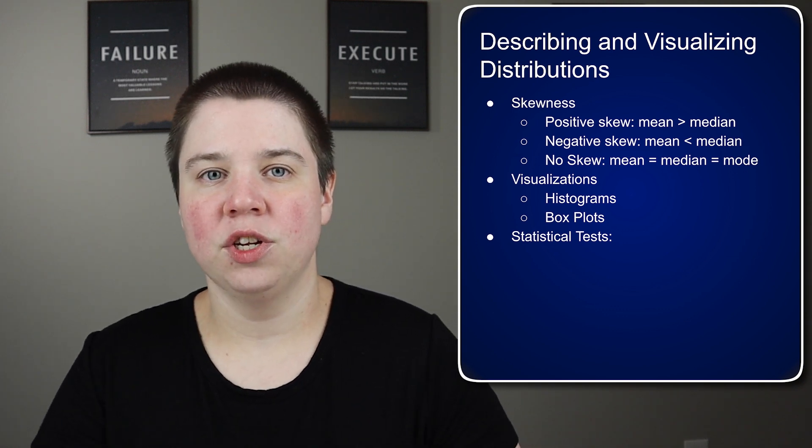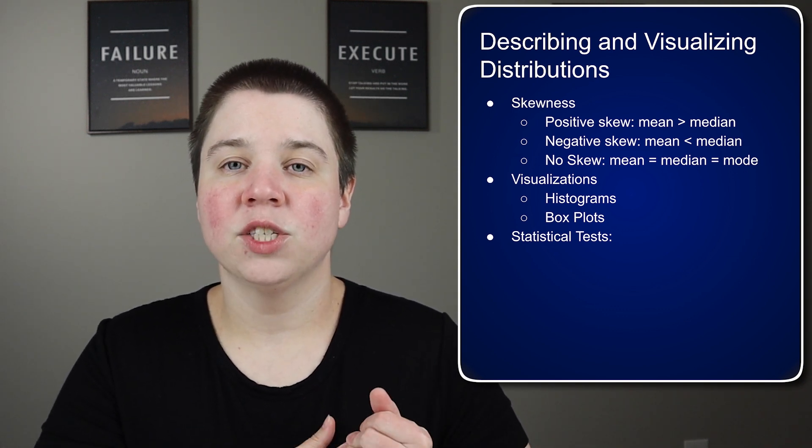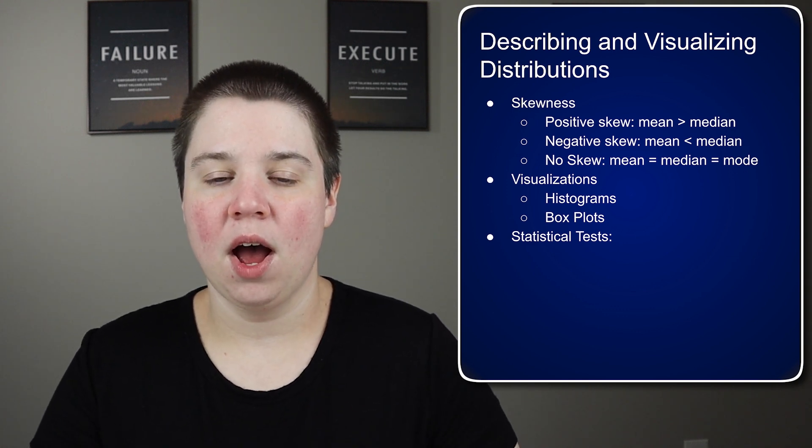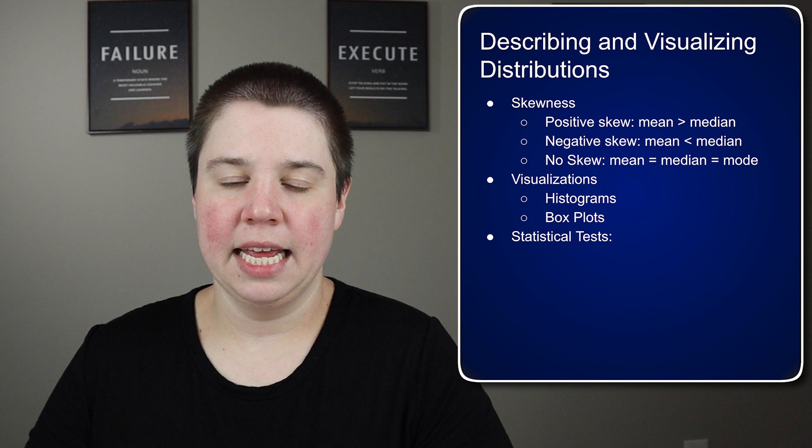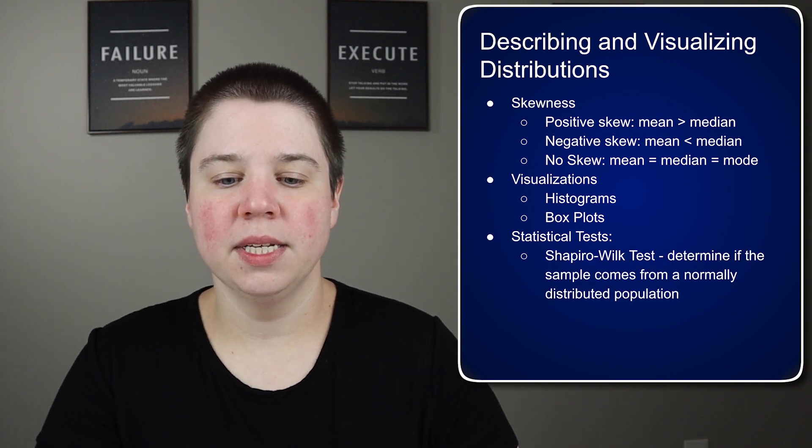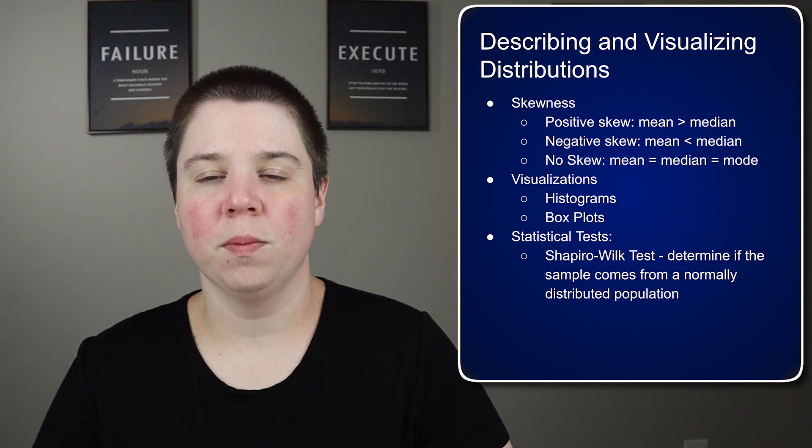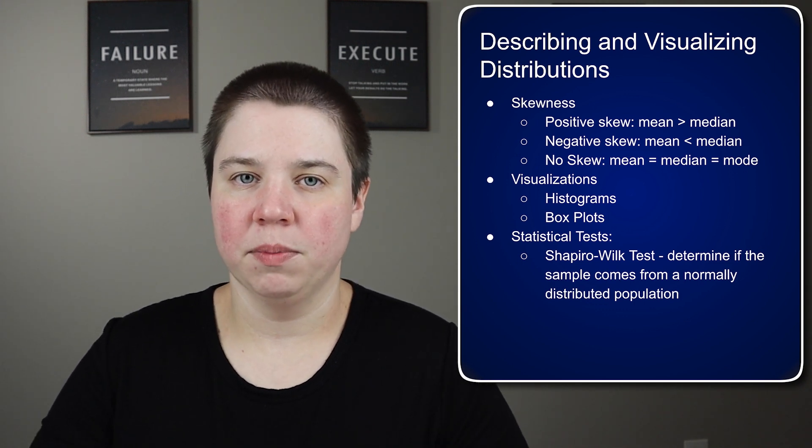There are also statistical tests to determine if you are comparing to a certain type of distribution and if you can use certain statistical tests that need that type of distribution. The Shapiro-Wilk test determines if the sample comes from a normally distributed population. This is typically used for smaller sample sizes.